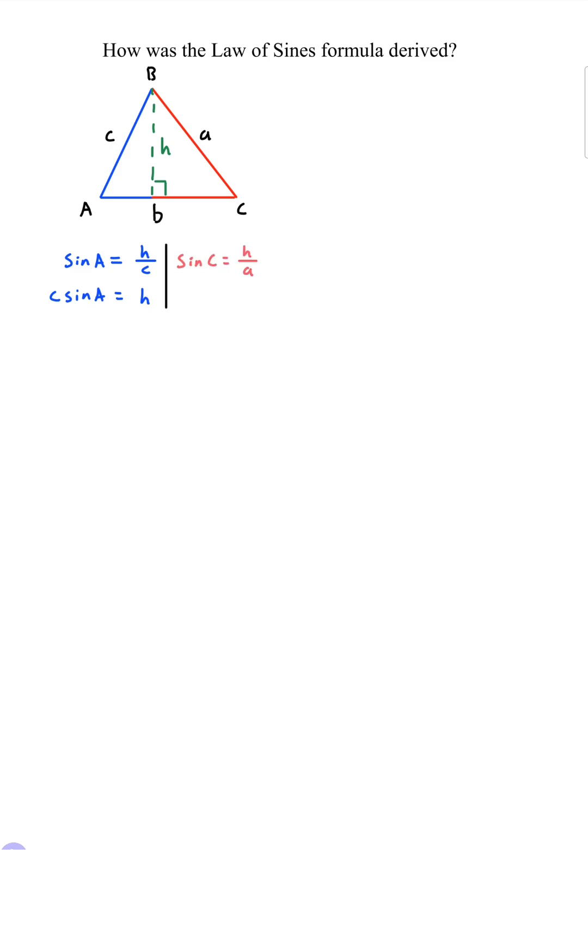Now let's take a look at this red part then sine of C is equal to opposite h but this time its hypotenuse is a. Multiply both sides by a you get a sine of C equals h.